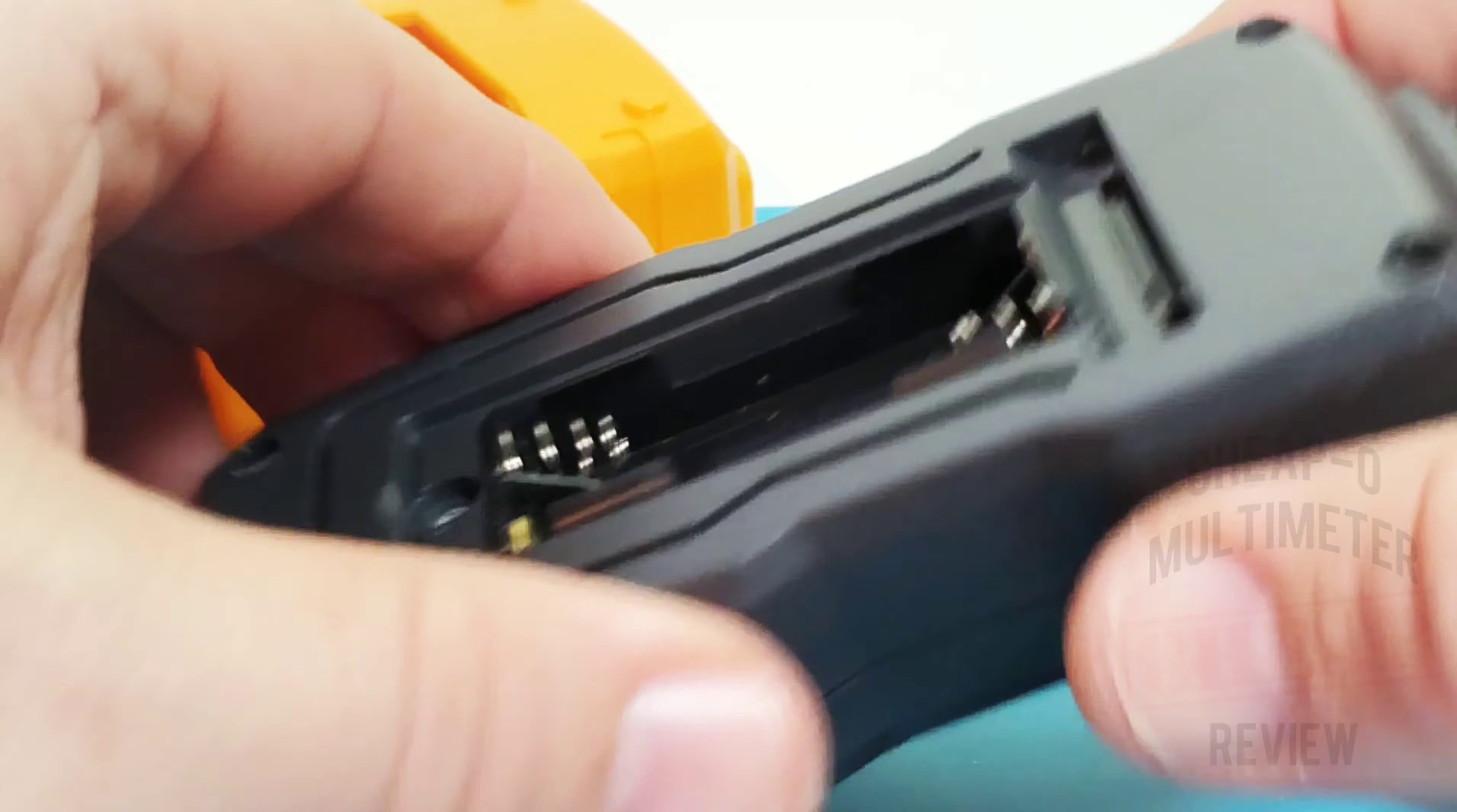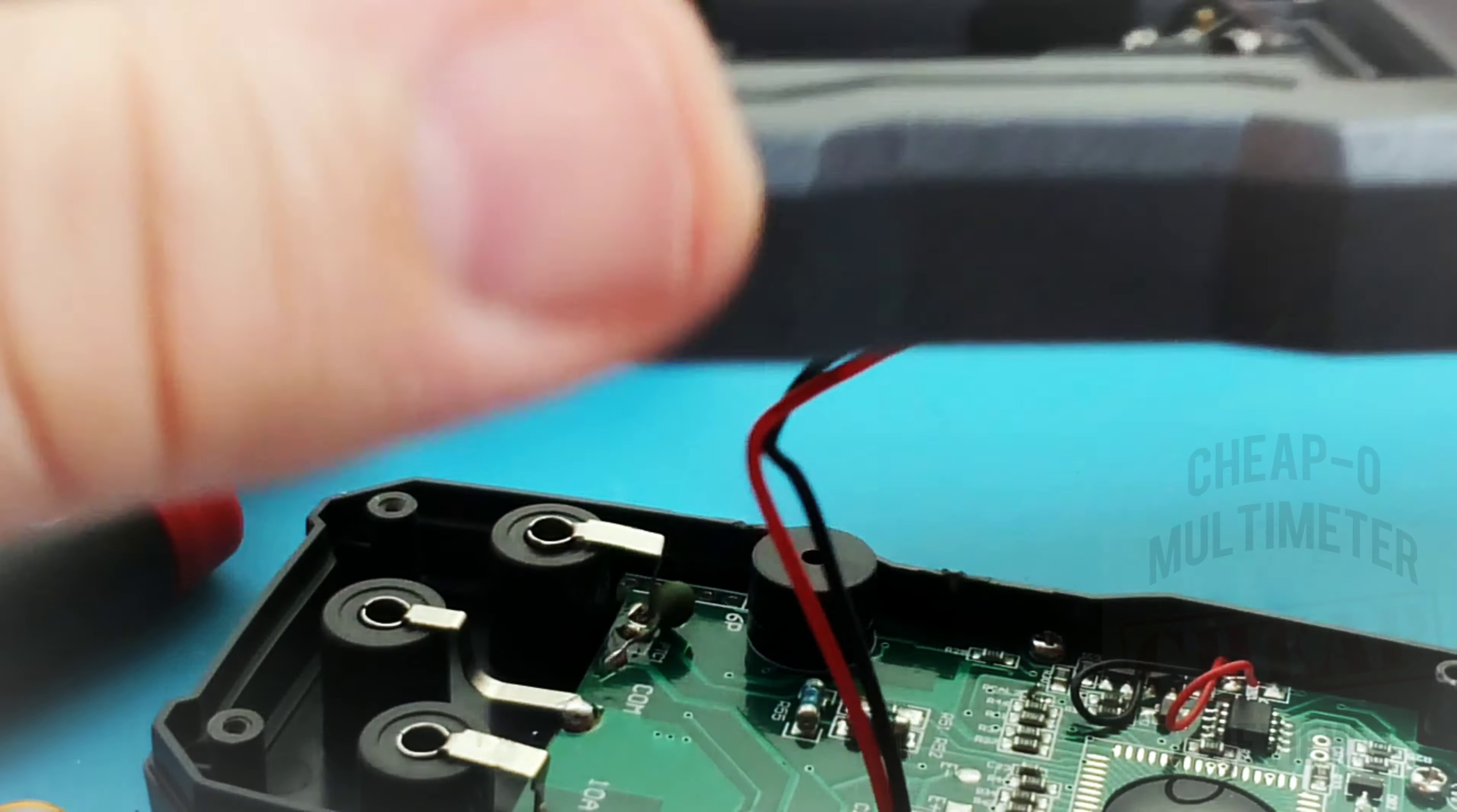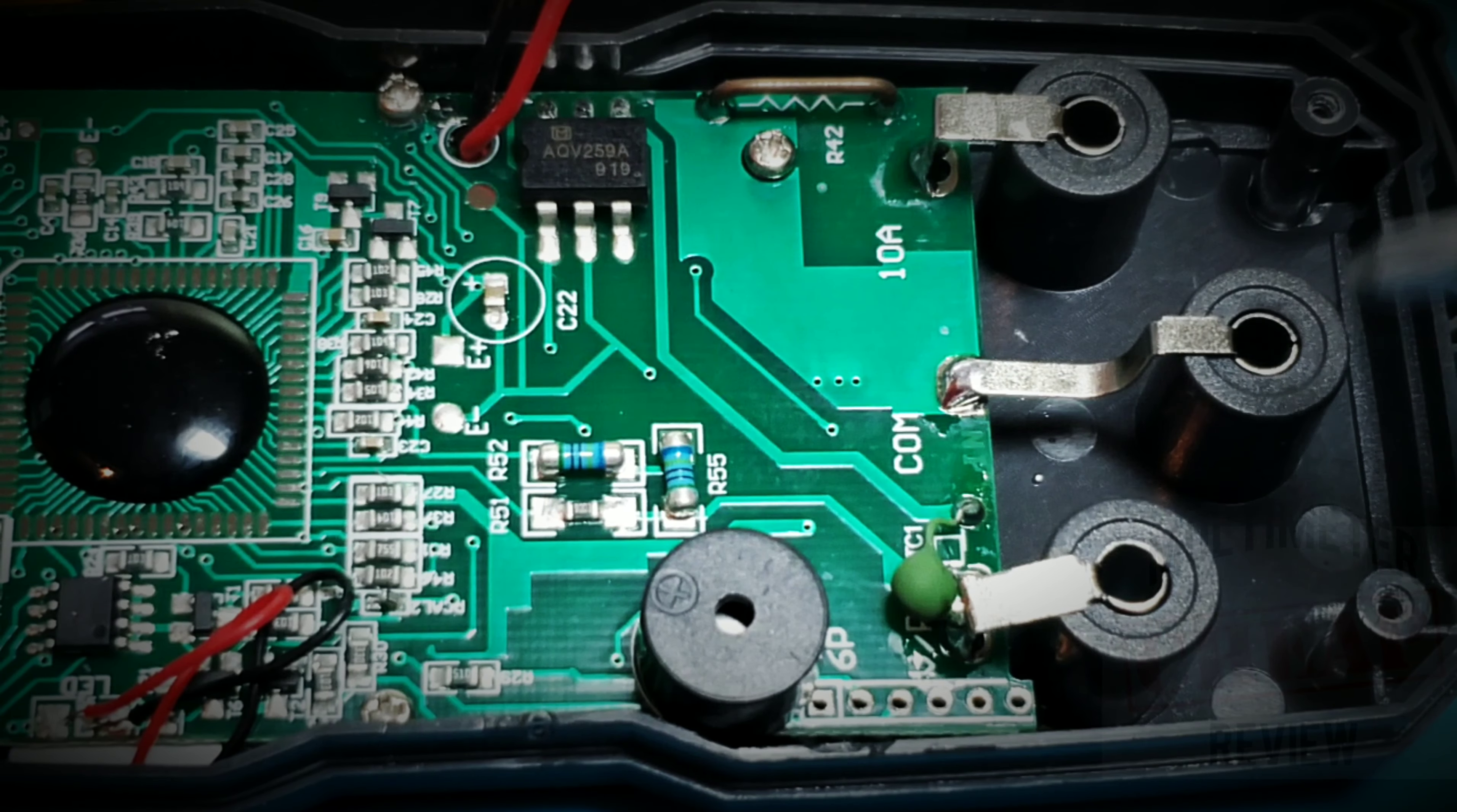And here we go, start off with the opposite side. And of course, yeah, no surprises there, no shielding. And that battery housing is soldered directly to those 1.5 volt holders. Okay, we are on the inside.